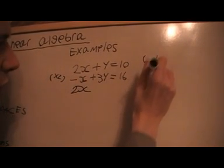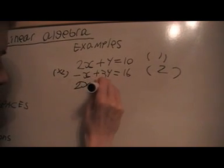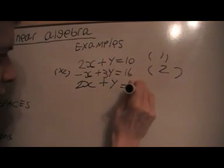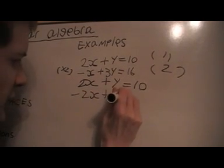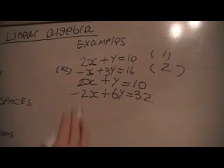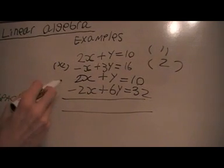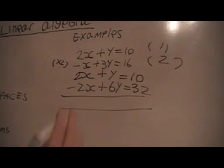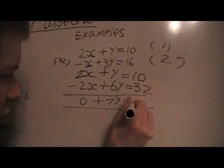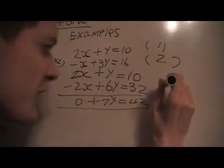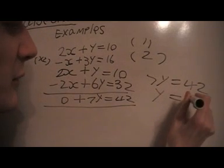I'll call that equation 1. I'll call that equation 2. And I'm timesing this one by 2. So I get minus 2x plus 6y equals 32. And the idea is to eliminate the variable. You see that we can eliminate x by adding these two equations. Because we get 0 here, we get 7y here, and we get 42 here. So then we get 7y is equal to 42. So then we can solve and say that y is equal to 6.